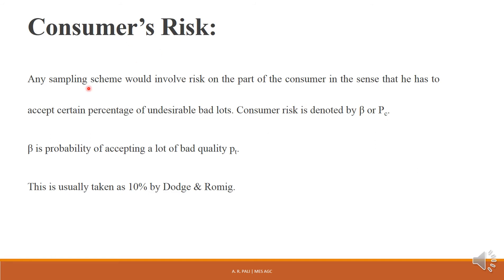Next is consumer's risk. Any sampling scheme involves risk on the part of the consumer in the sense that he has to accept a certain percentage of undesirable bad lots. If a consumer accepts a bad lot, this is an error — a risk on the part of the consumer. Consumer's risk is denoted by β or Pc (where c stands for consumer). β is the probability of accepting a lot of bad quality, where pt denotes a bad quality lot.